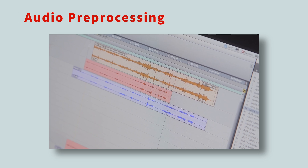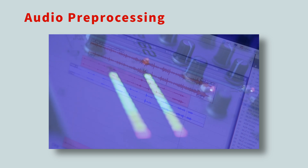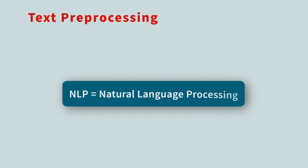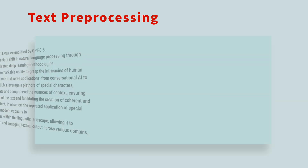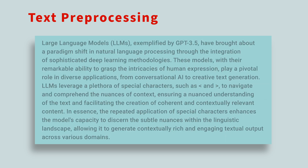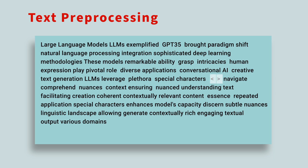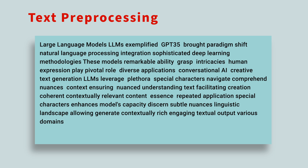For audio signals, preprocessing could include filtering out noise, or adjusting the volume to a standard level. In the case of NLP models, preprocessing takes many forms, depending on the language and purpose of the model. Given a piece of text, you may prepare it by removing all unnecessary white space, punctuation, common words, or special characters. This reduces the complexity of the text, and can improve the efficiency of the language model.